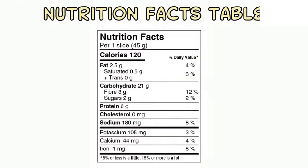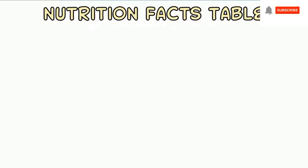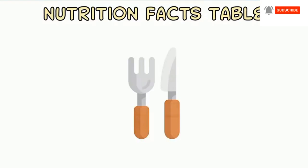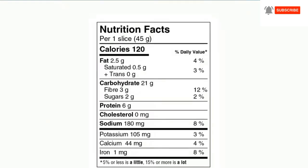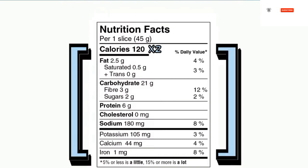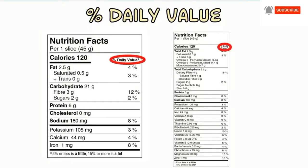Start by finding the serving size listed underneath the nutrition facts table. All of the nutrition information is based on the serving size — is this the amount you are eating, or are you eating more or less? If you double the serving size amount, you will have to multiply everything by two, as the information for the 13 core nutrients listed is based on the serving size.